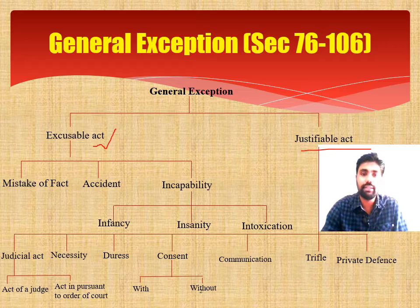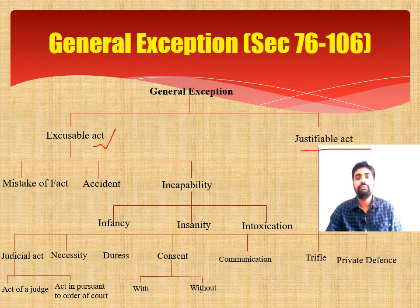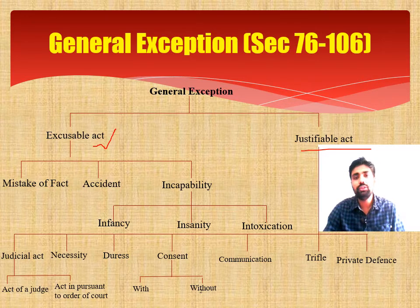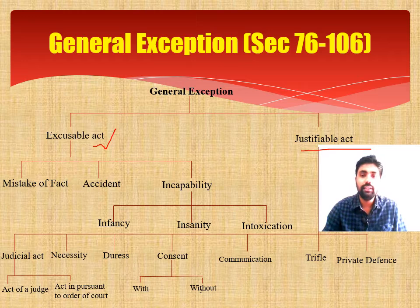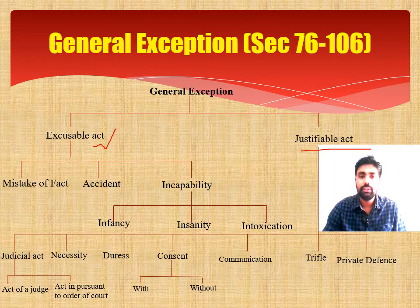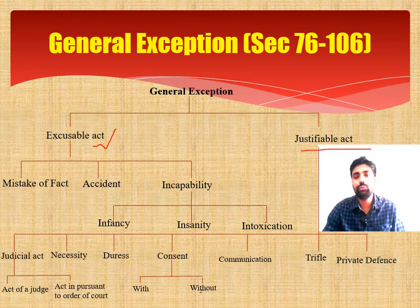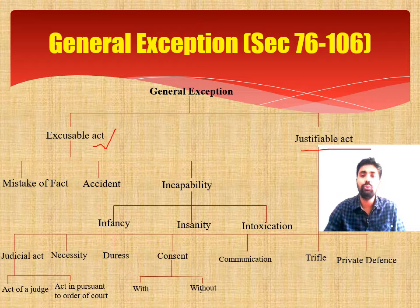The three parts of Excusable Acts are: Mistake of Fact (Sections 76 and 79), Accident (Section 80), and Incapability. Incapability is further divided into three sub-sections: Infancy, Insanity, and Intoxication. Infancy is governed by Sections 82 and 83 — if a child below seven years of age commits a crime, it shall not be a crime at all.